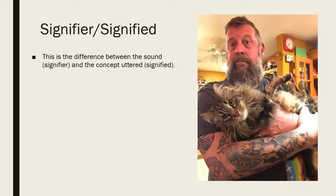But then we get back into the linguistics of it all. The book uses the example of the letters C-A-T, meaning a domesticated feline mammal — the signifier. The authors take it further to express the name of their cat, Tittles — the signified. And here I am with my cat, C-A-T, the signifier, who is Eddie — the signified.